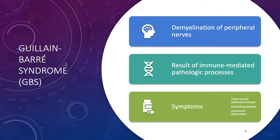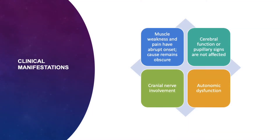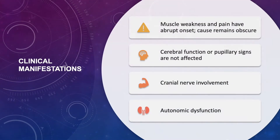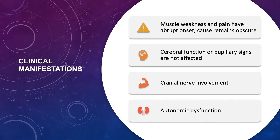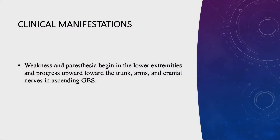Clinical manifestations of GBS include muscle weakness and pain that have an abrupt onset. However, the cause remains obscure. Cerebral function or pupillary signs are not affected. However, there is cranial nerve involvement and also autonomic dysfunction. This pattern of muscle weakness can help determine and differentiate Guillain-Barré from other types of peripheral and spinal nerve problems.